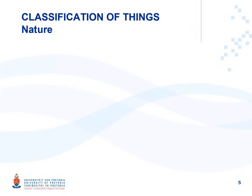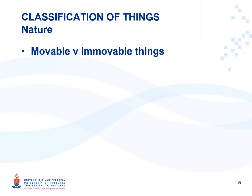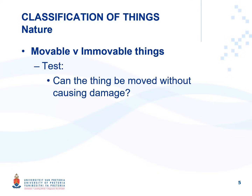Things can also be classified according to whether they are movable or immovable. The test is: can the thing be moved without causing damage? If it can be moved without causing damage, it is movable; if it cannot, it is an immovable thing. Land, for example, cannot be moved without damage and therefore constitutes an immovable thing. Permanent attachments — such as a house built on land — also cannot be moved without damage and therefore constitute immovable things.